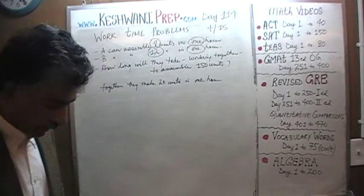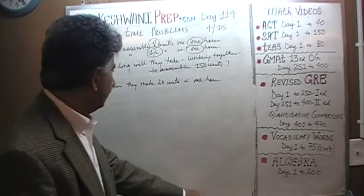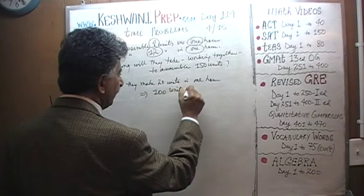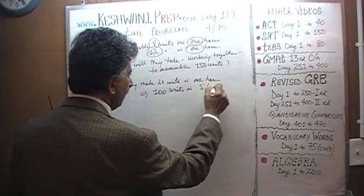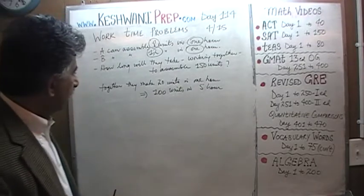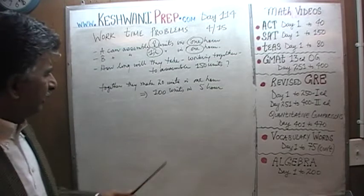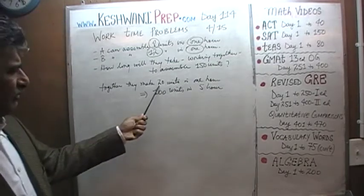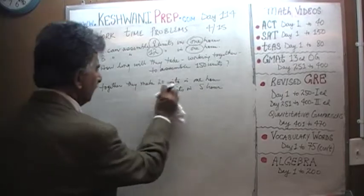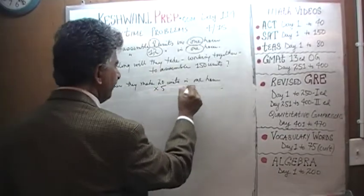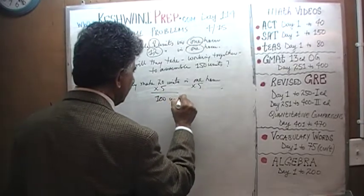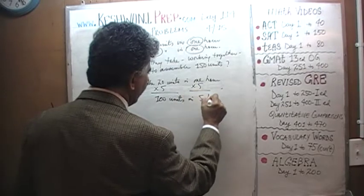If they make 20 units in one hour, that in turn implies they must make 100 units in five hours — essentially five times this amount, five times 20. If they make five times as many units, it takes five times the amount of work.